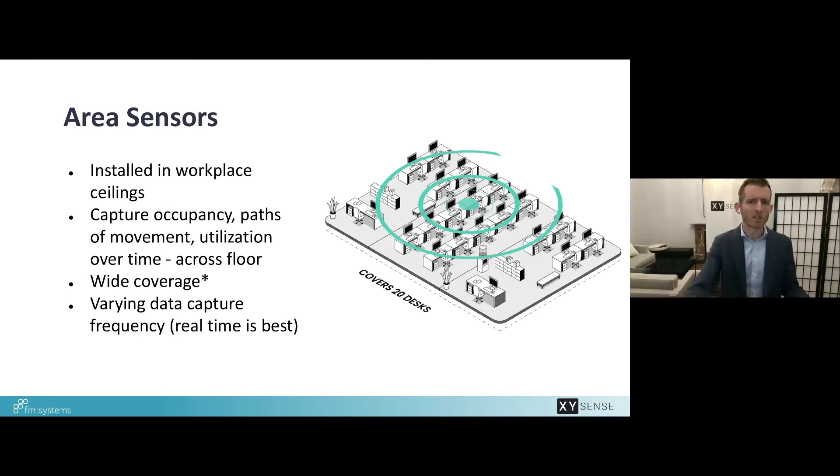The technology inside area sensors varies in the market. Sensors range from thermal or heat technology to Wi-Fi or computer vision. At XY Sense we use computer vision and that means we've trained an artificial intelligence algorithm offline to understand and recognize people. We then deploy that algorithm to the sensor.